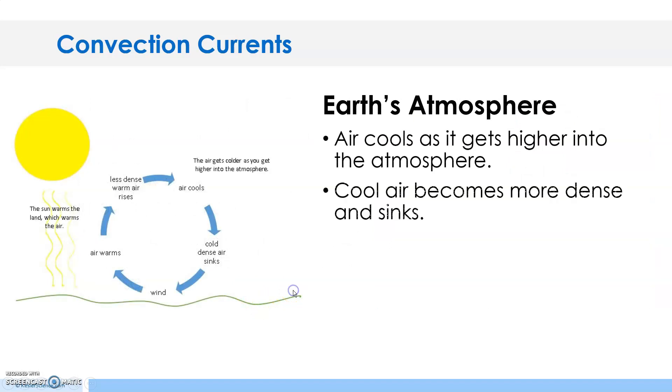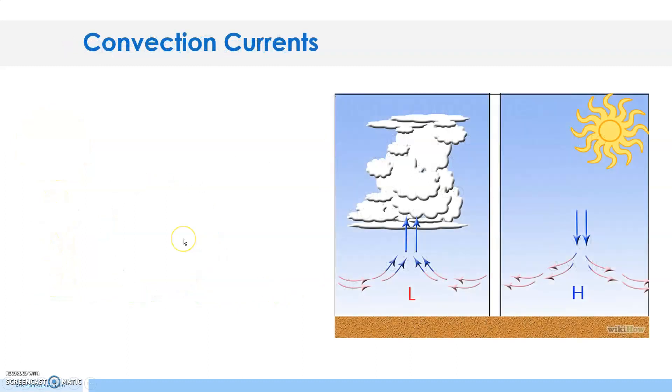Convection currents in the Earth's atmosphere: air cools as it gets higher into the atmosphere. Cool air becomes more dense and sinks. Wind is created as the cool air moves in to replace the warm air. So if you look at the diagram...